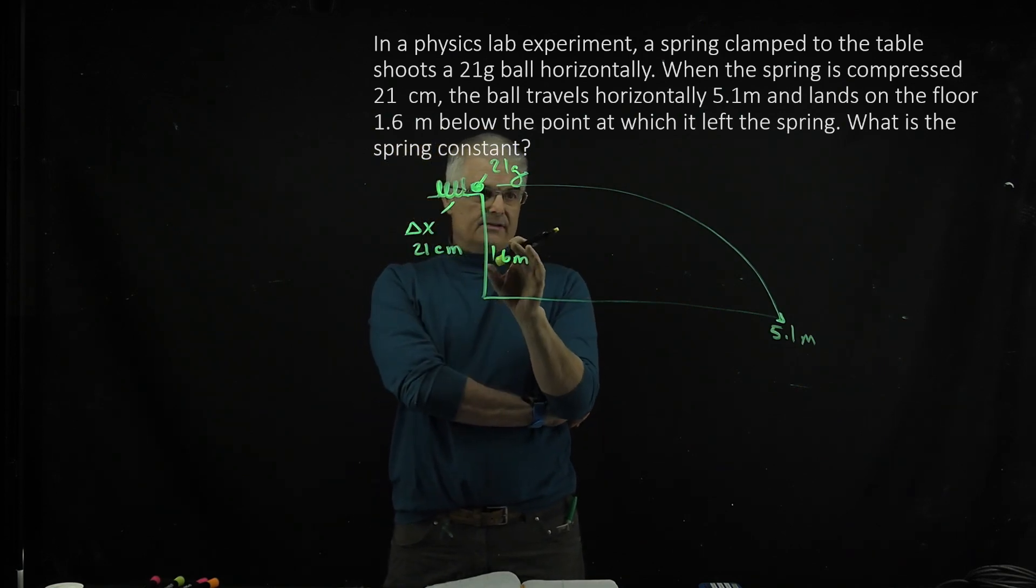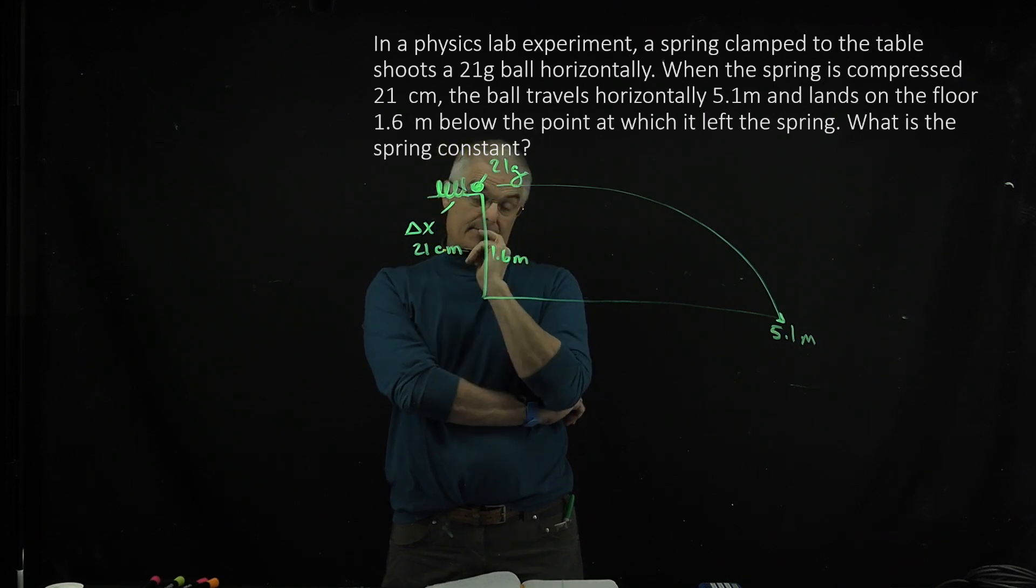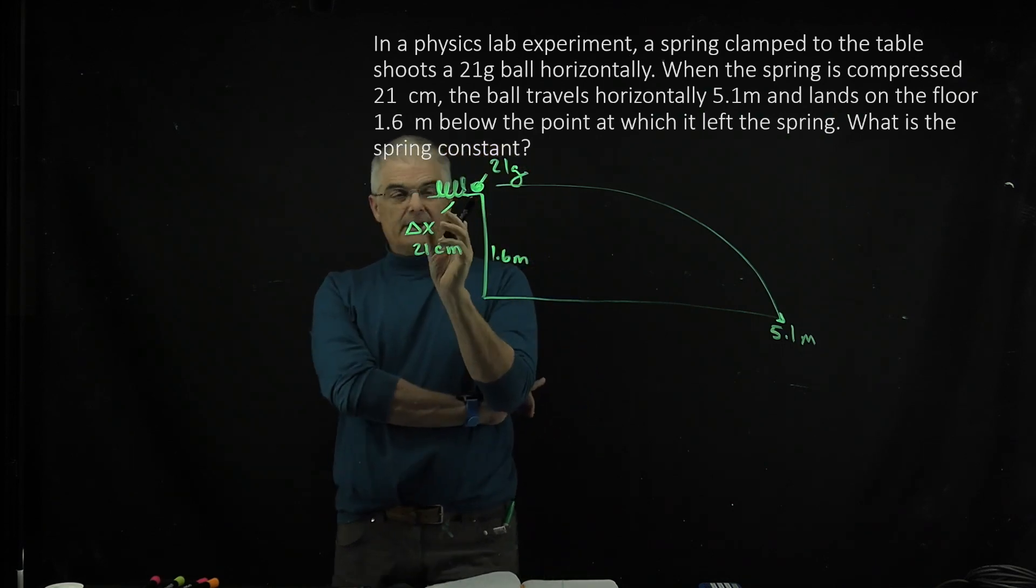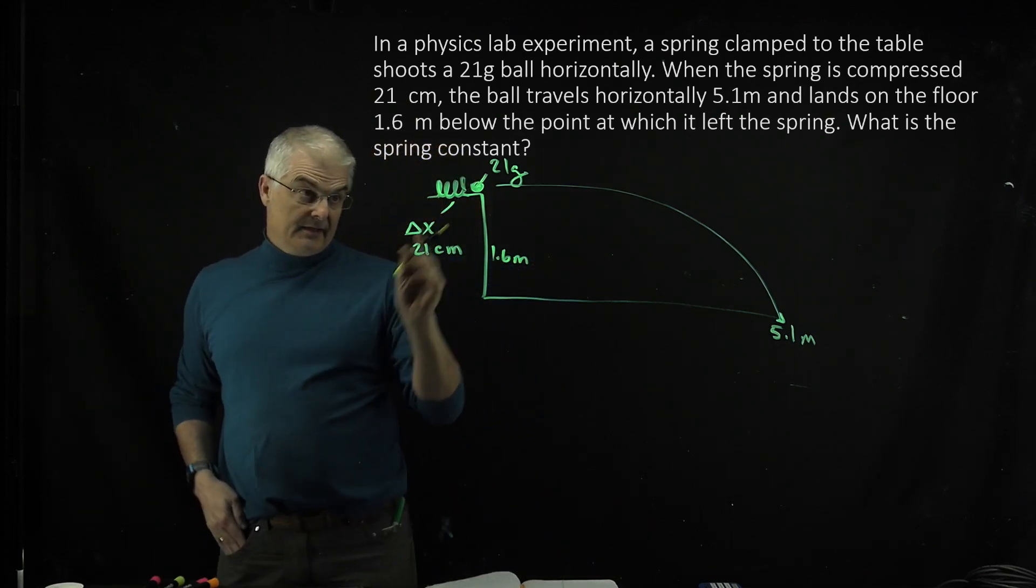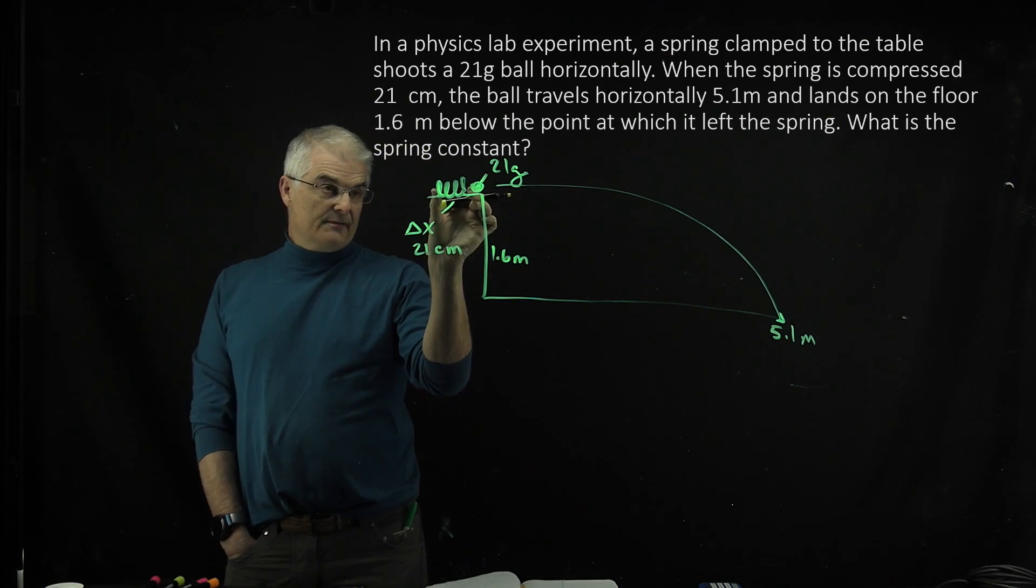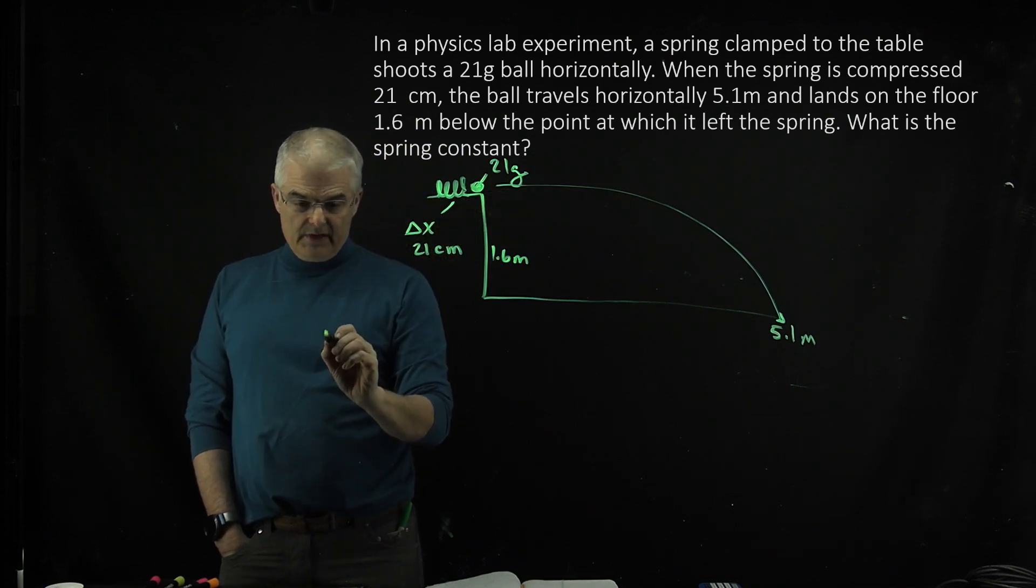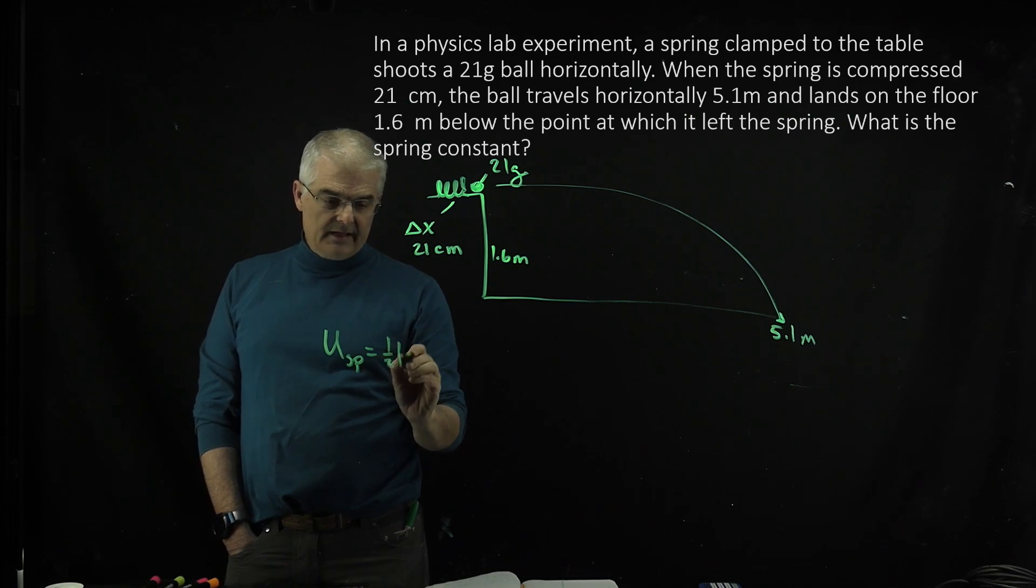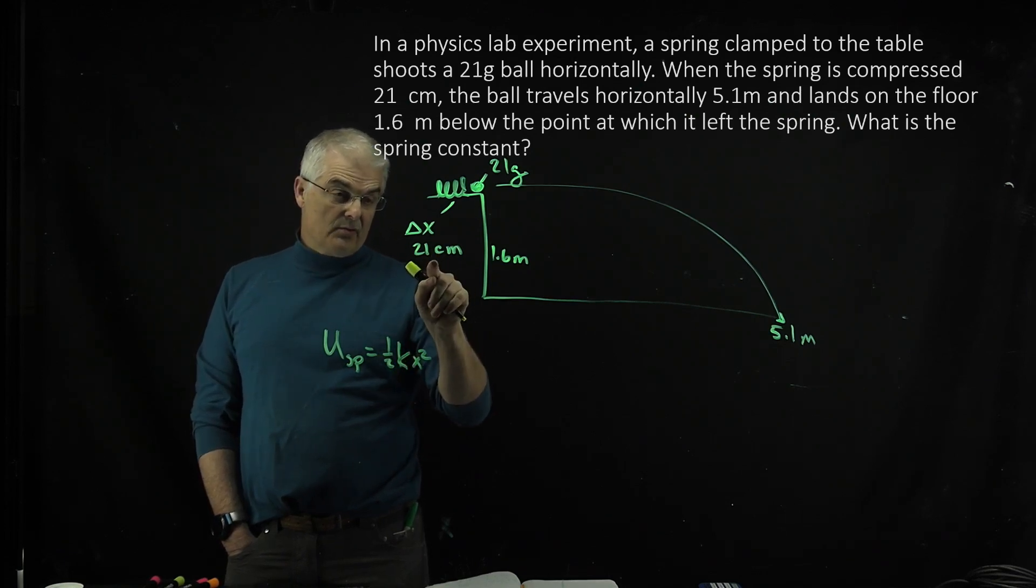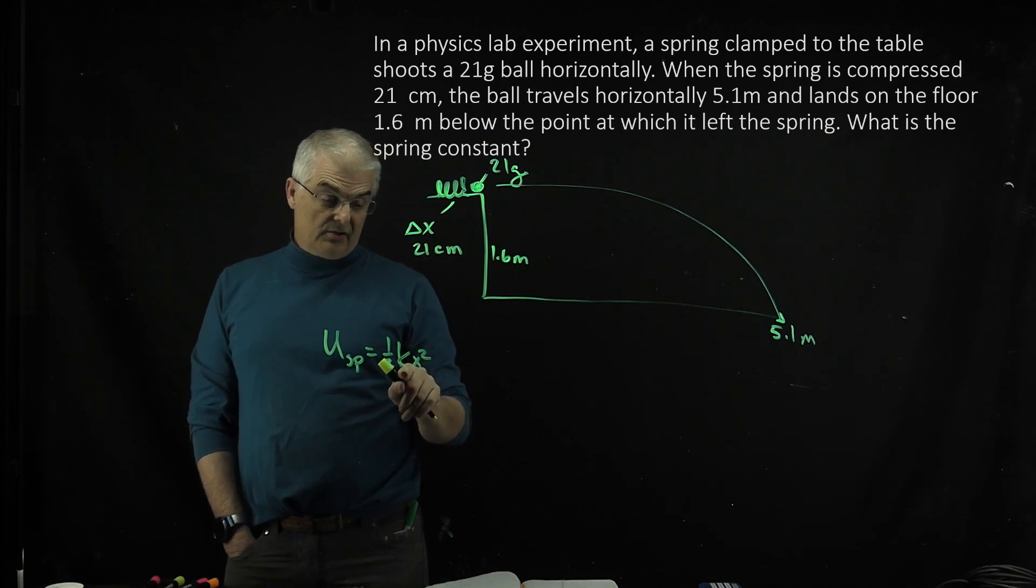So the question is, what is the spring constant? Now let's think about this. What energy does it have at the beginning of this experiment? You've got the potential energy of the spring. Remember, the spring potential energy is 1/2 kx², where x is the 21 in meters. So you're actually trying to solve for k.